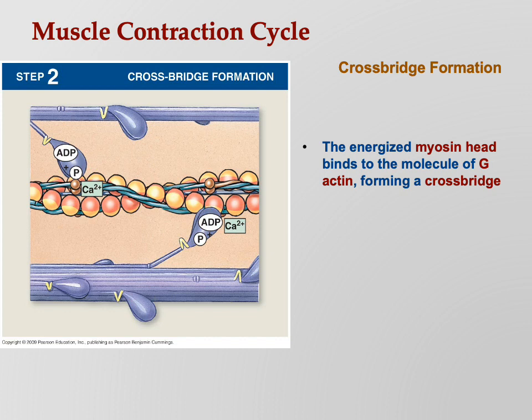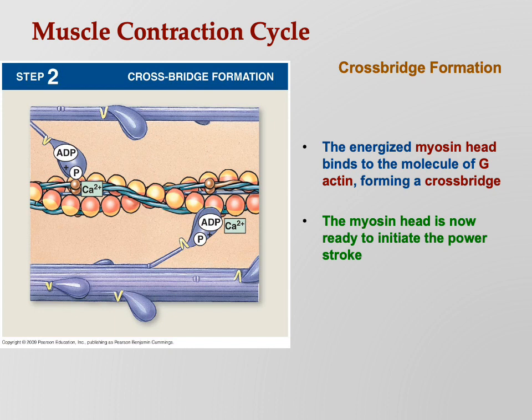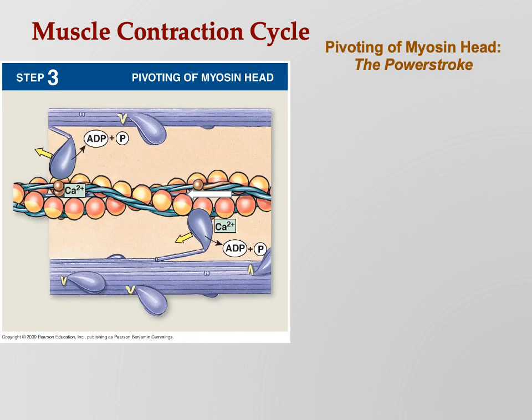The energized myosin head binds the molecule of G-actin, forming a cross bridge. The myosin head is now ready to initiate what we call the power stroke. Think about flexing your arm at the elbow. Contracting a muscle is like rowing a boat - look in the bottom right of the illustration. You can see the myosin head attached to the filament; if it rows to the left like rowing a boat, it's going to pull that whole thin filament along with it.